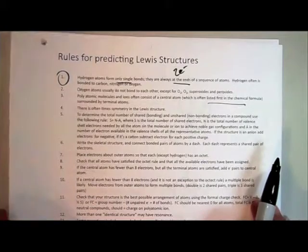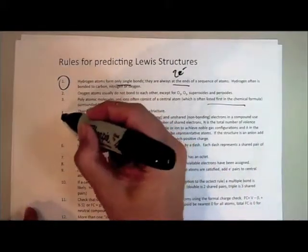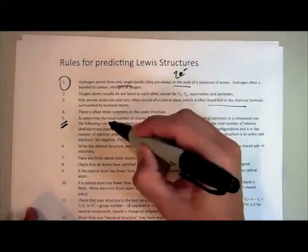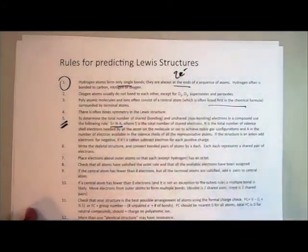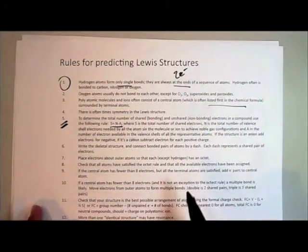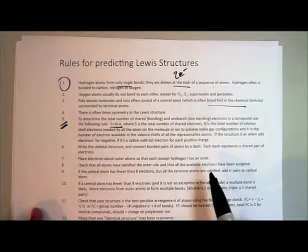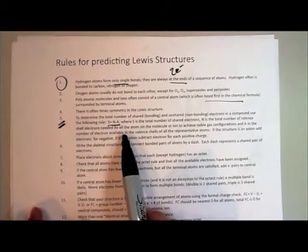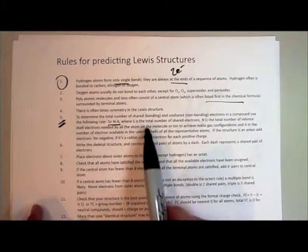The last rule of thumb before getting started is the s = n - a rule. On the video, you probably can't read these words, so you'll need your printed notes to follow. The s = n - a rule is where s is the total number of shared electrons in the molecule.